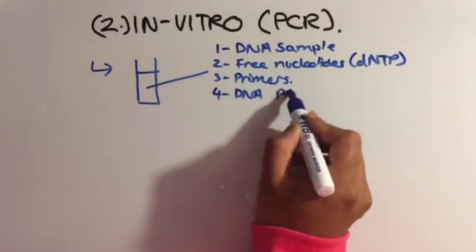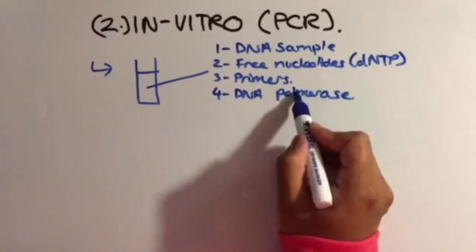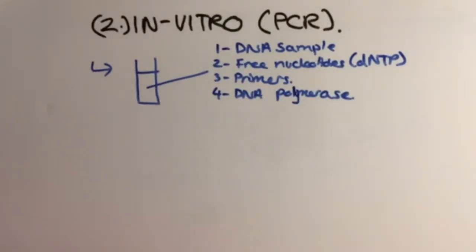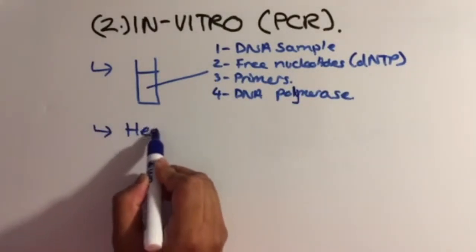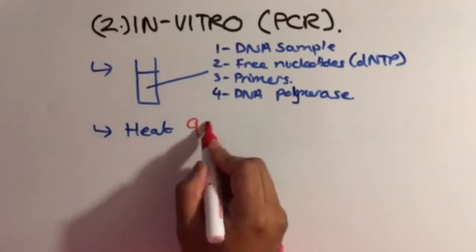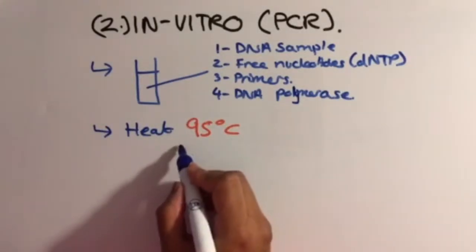This sample is then heated up to 95 degrees Celsius to break the hydrogen bonds that occur between the two strands of DNA.